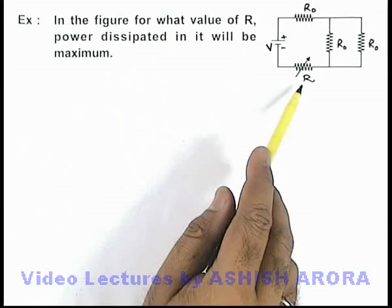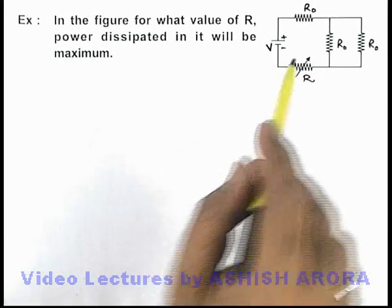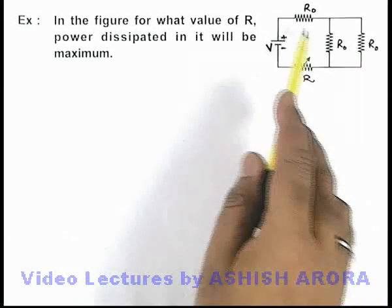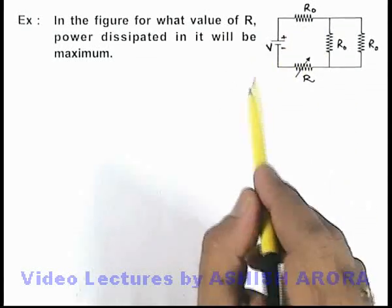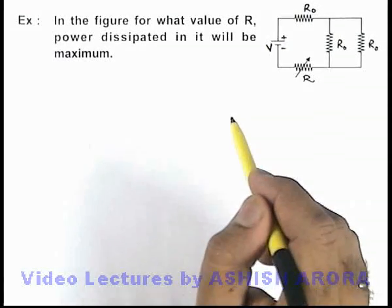Here we can see that this is a variable resistance, and other than this there are three resistances of value R_not, and a battery of EMF V is connected.